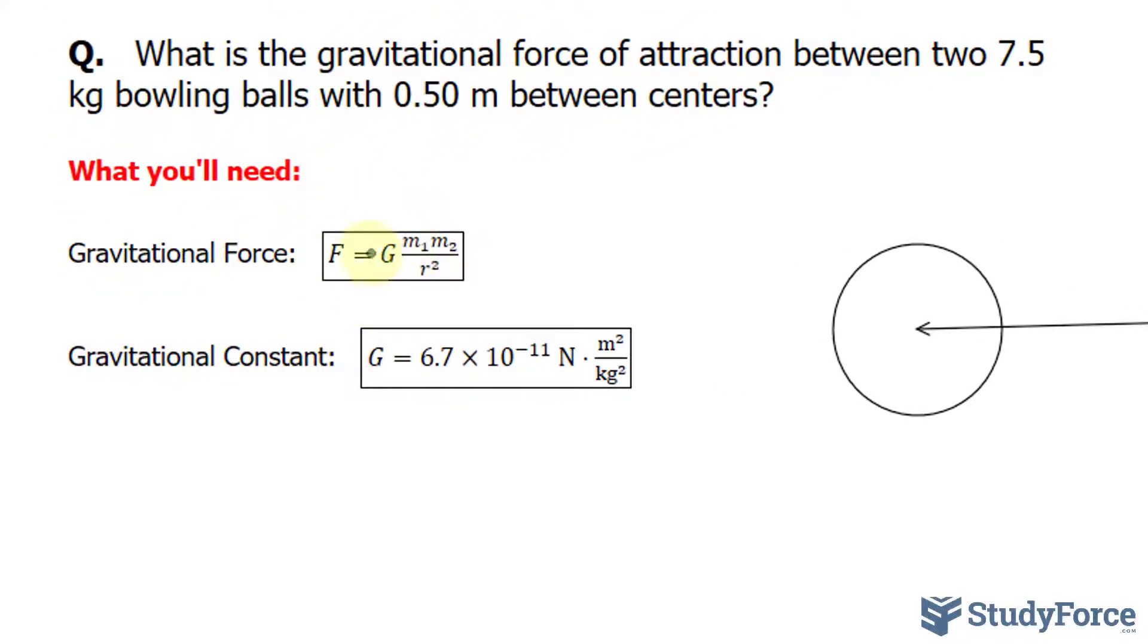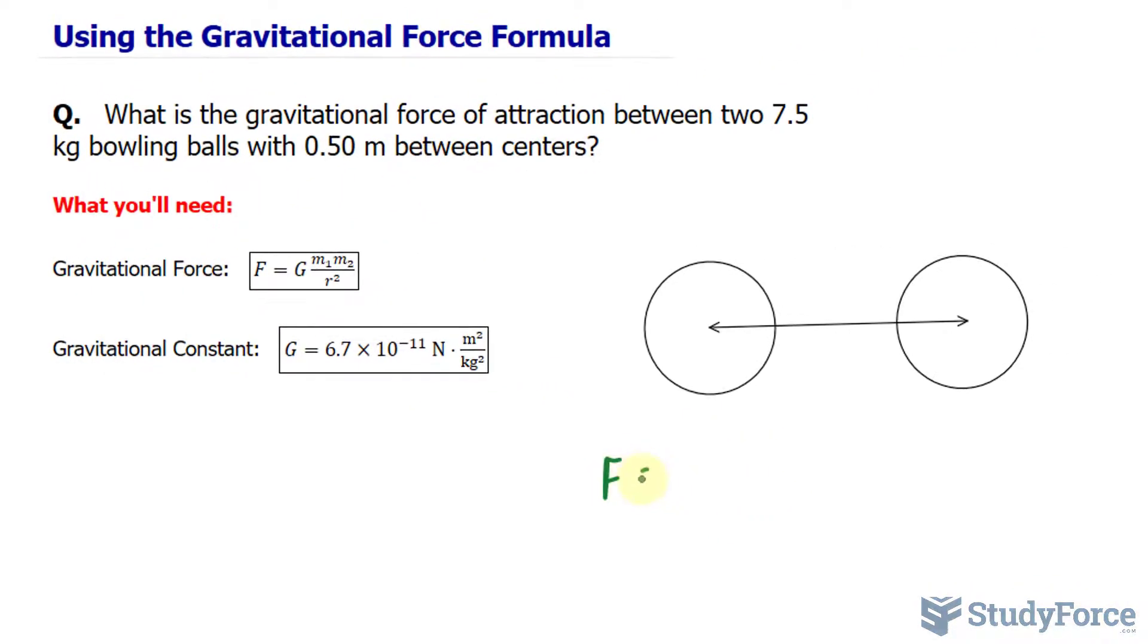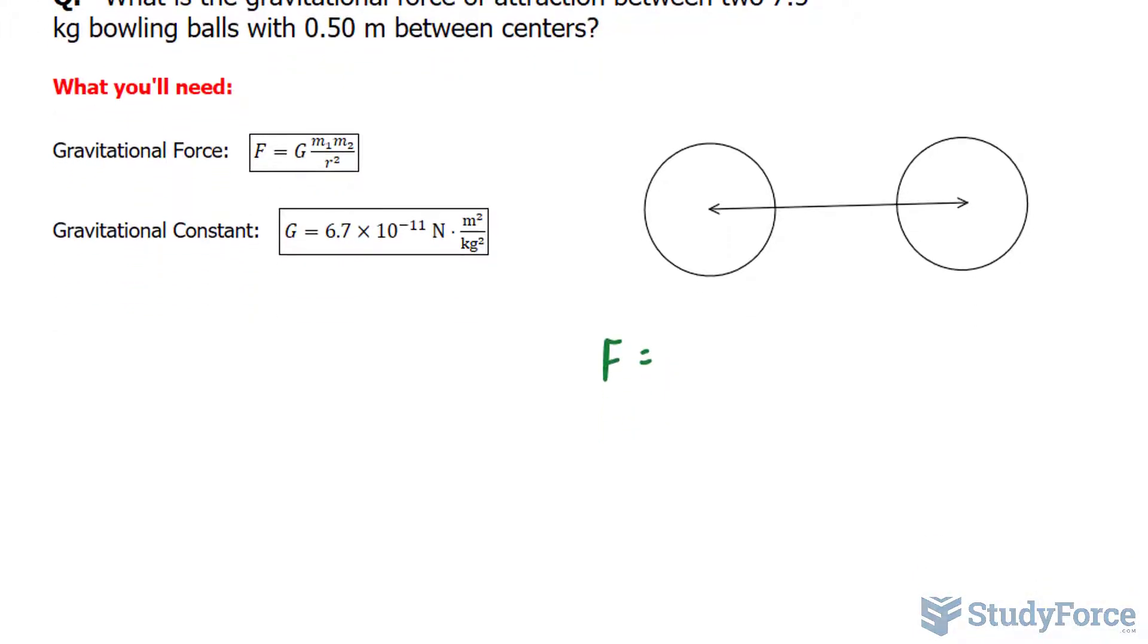We'll be using this formula where we have F for force is equal to capital G, which is the gravitational constant and this number is universal regardless of where this calculation is being done, whether it be on Earth or some other planet. We'll write down 6.7 times 10 to the power of negative